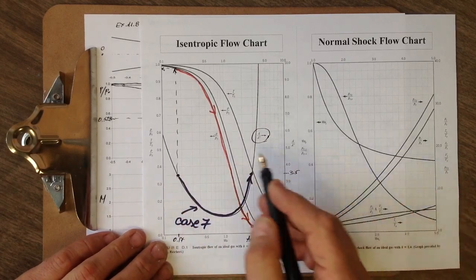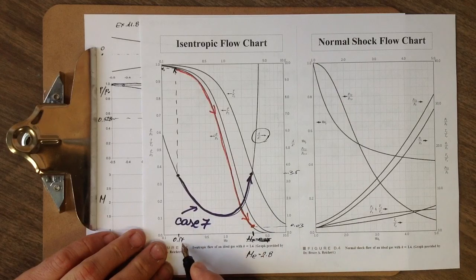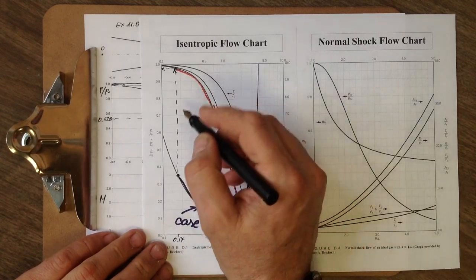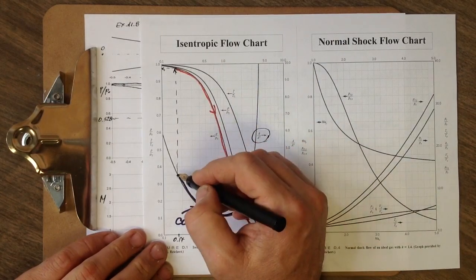And ignore this case 7 that comes later. And for that Mach number we have the value of p over p_nod of 0.98, so it's p_e over p_nod.